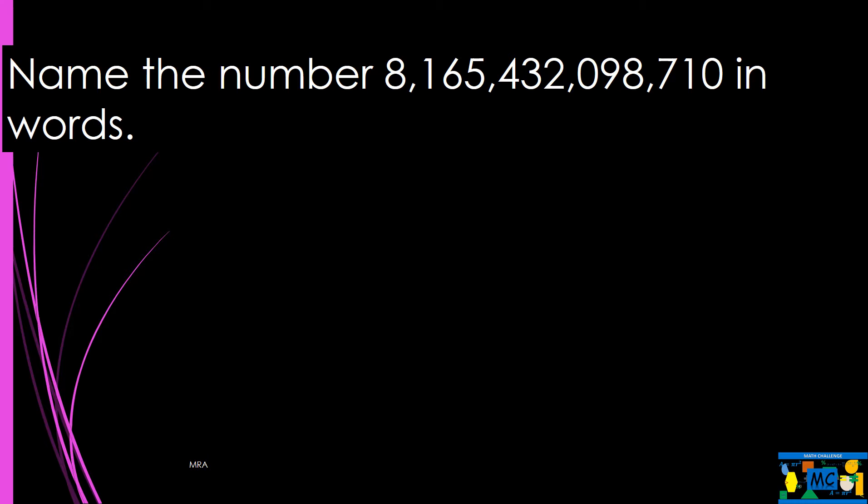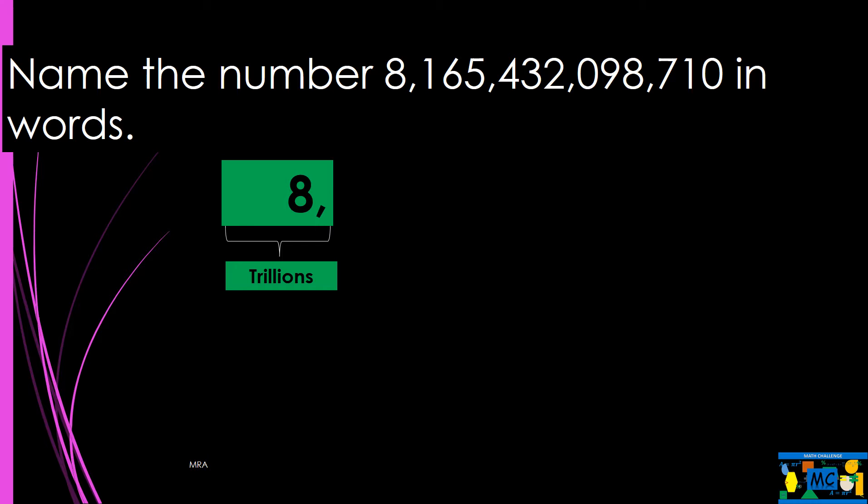Example: Name the number 8,165,432,098,710 in words. Begin with the leftmost digit, which is 8. It is in the trillions place, so write the word eight, followed by its period name, trillion.